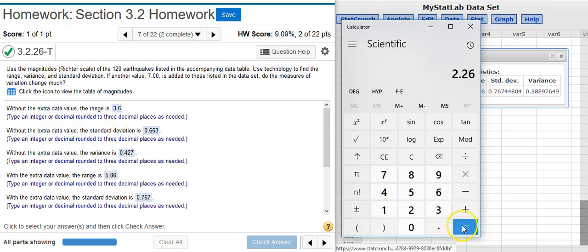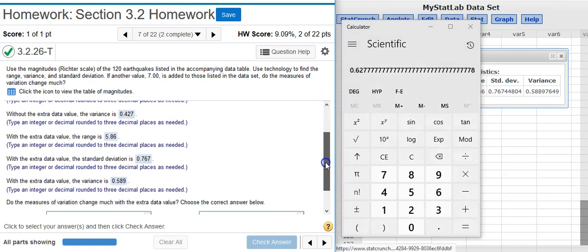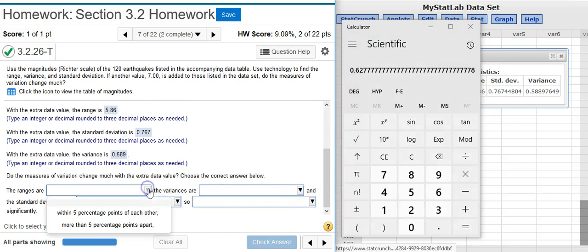And then I'm going to divide that by the original amount, 3.6, and I get 62%, which is well over 5%. So this first one's going to be more than 5 percentage points.